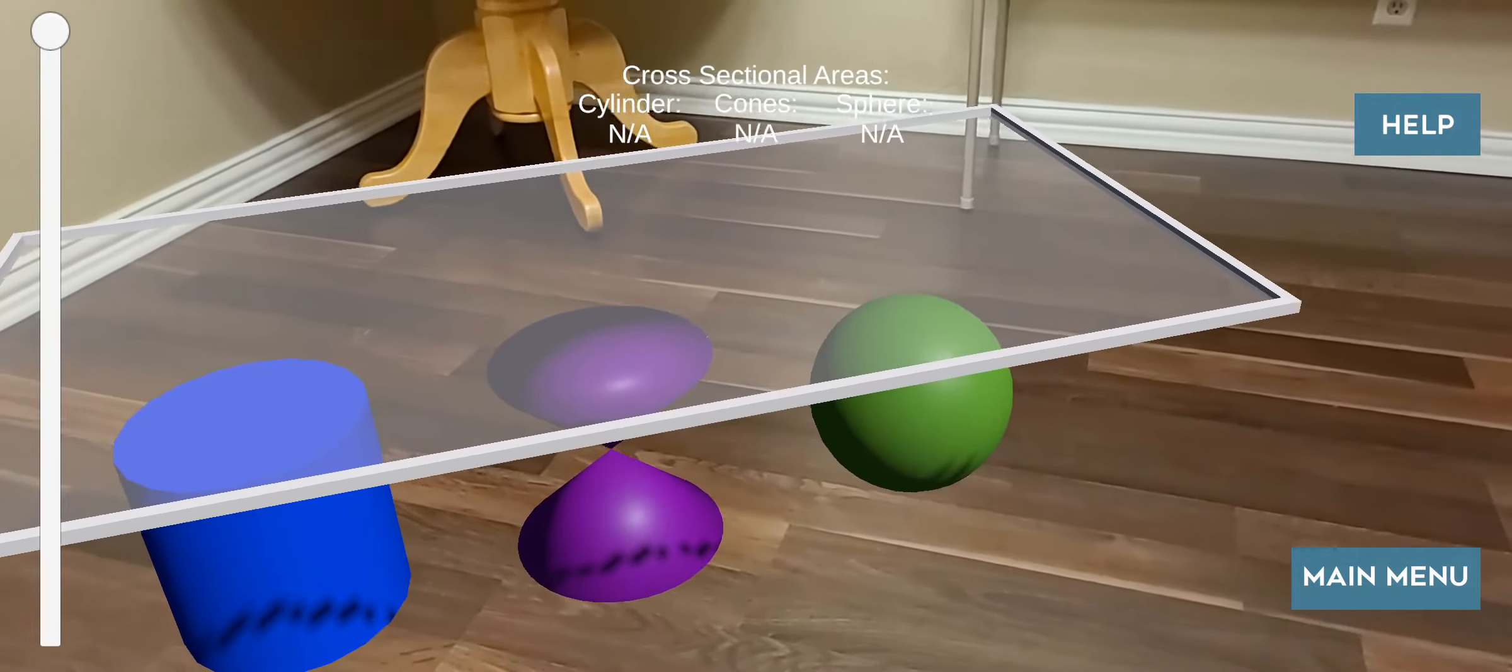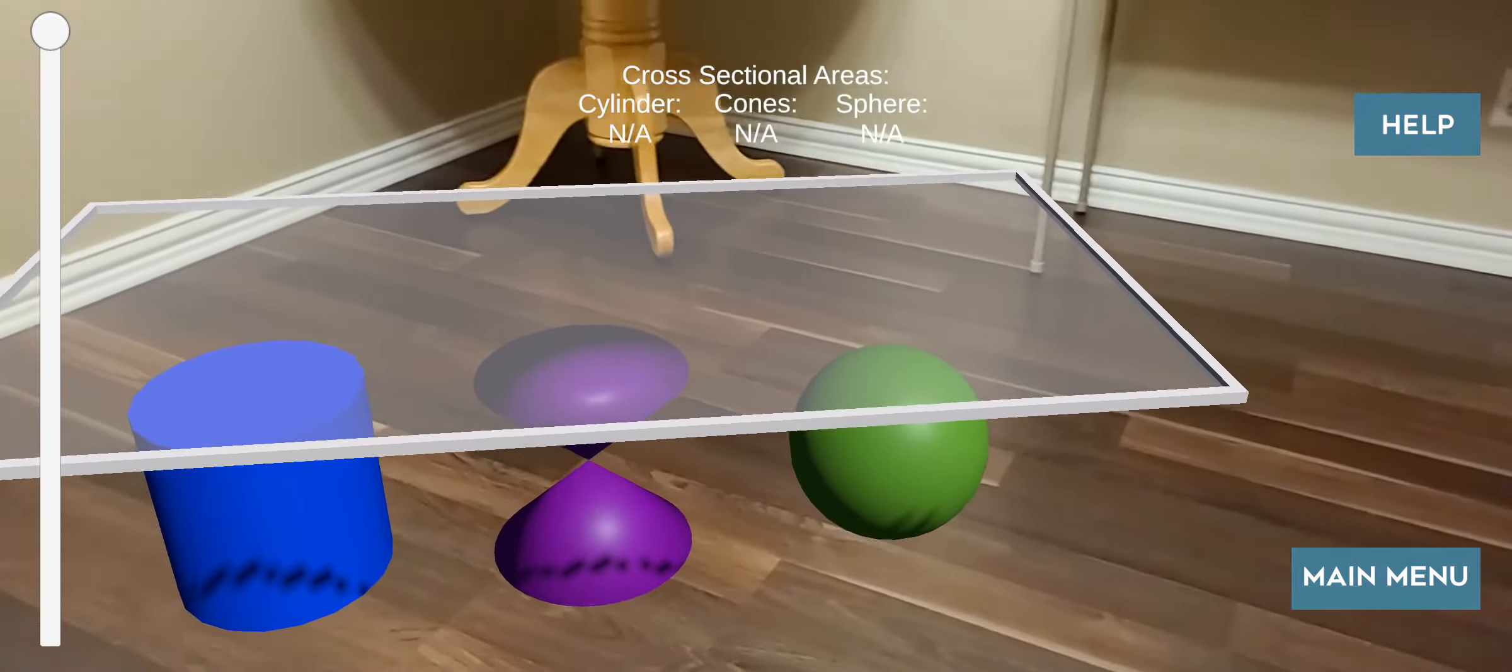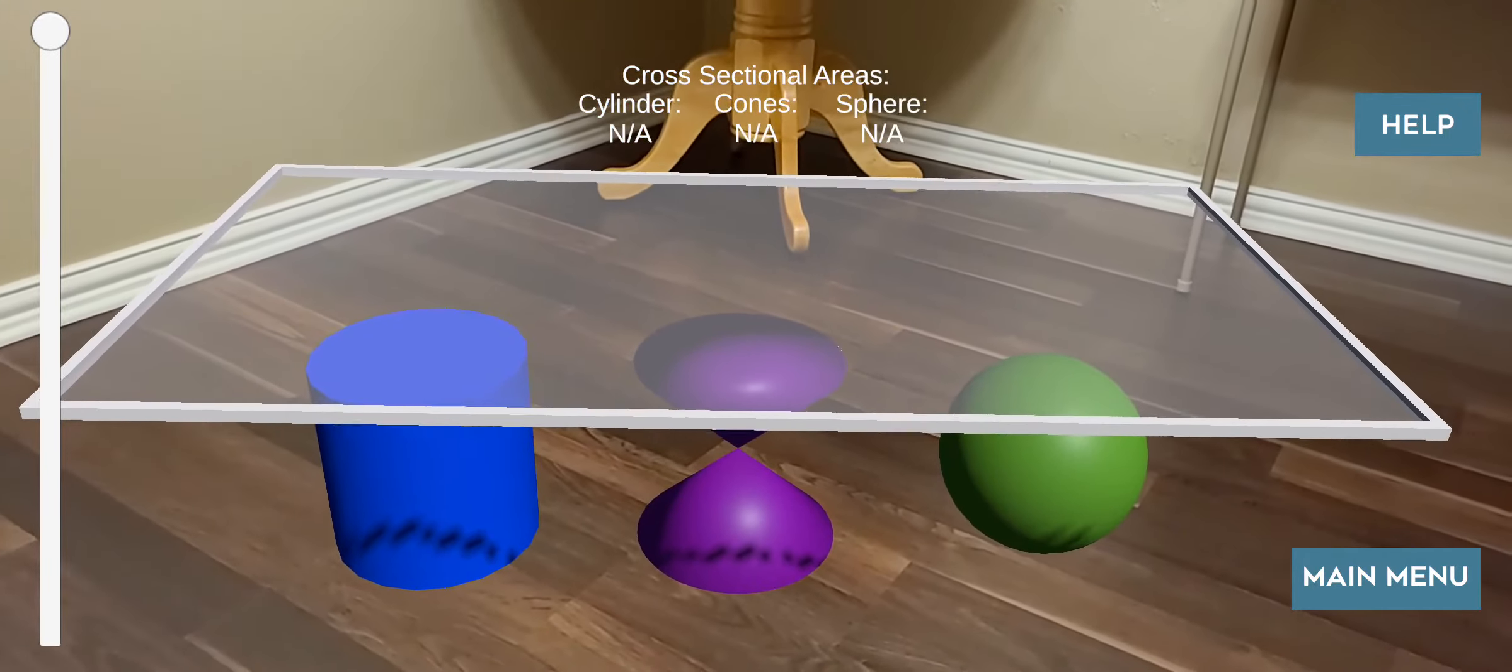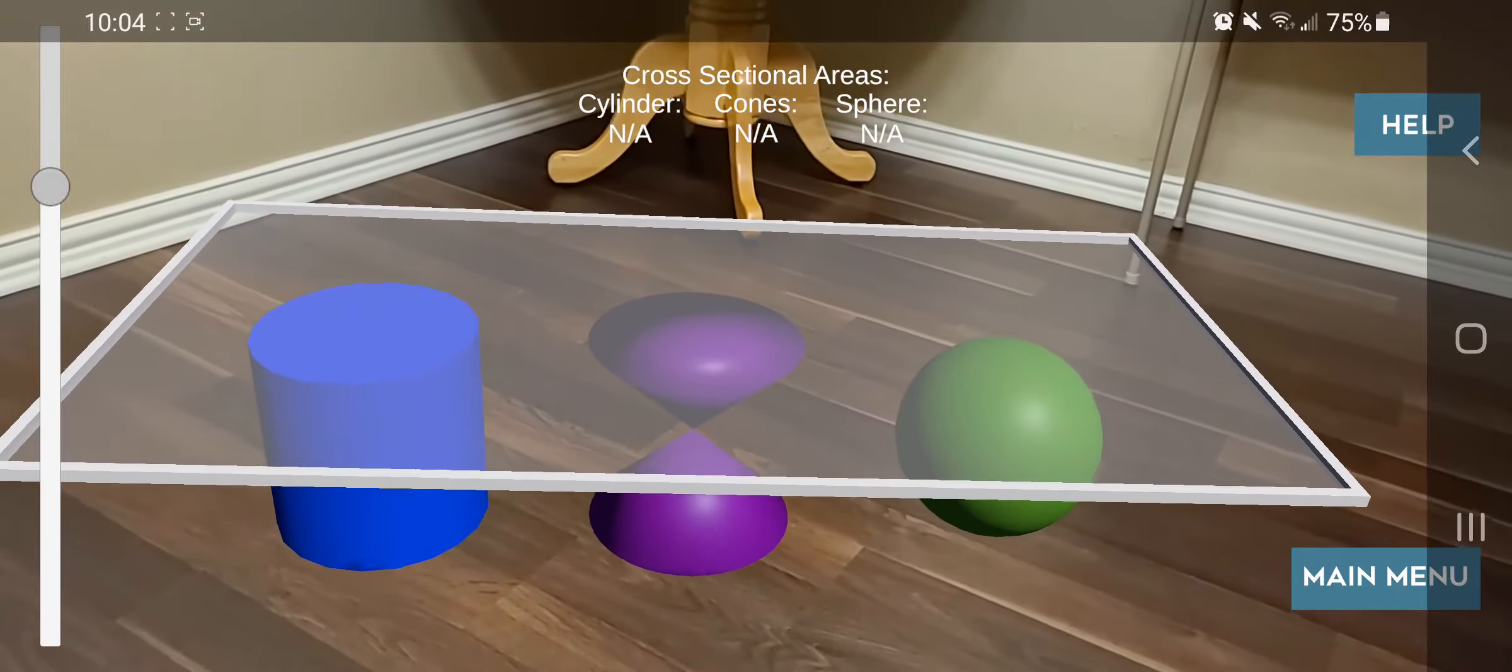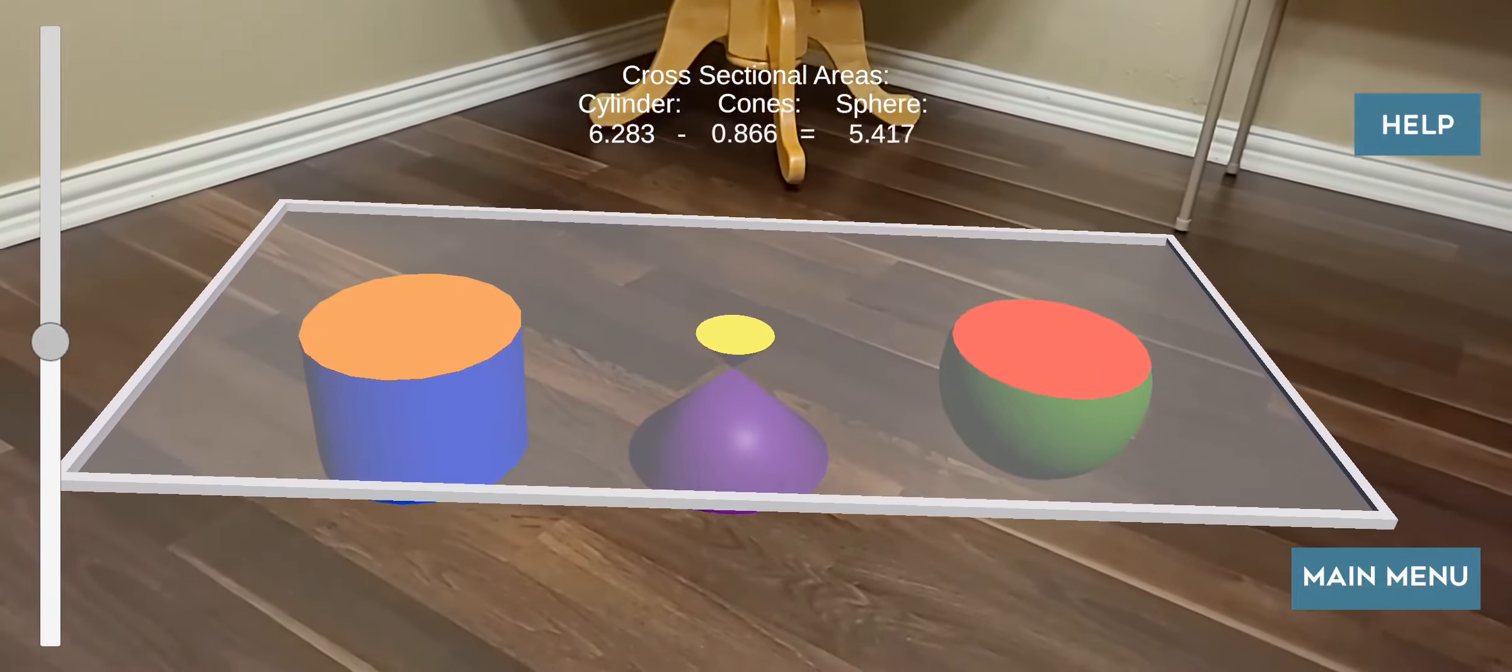You can also see in this visualization a virtual slicing object at the top. It has like a transparent glass appearance. You can control its height with the slider bar on the left. Moving it allows us to visualize cross sections at a given height across all three objects.